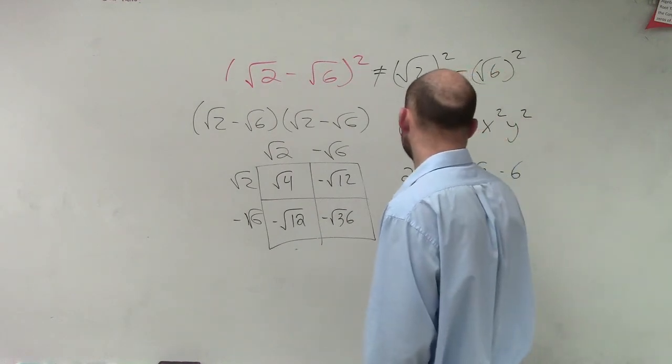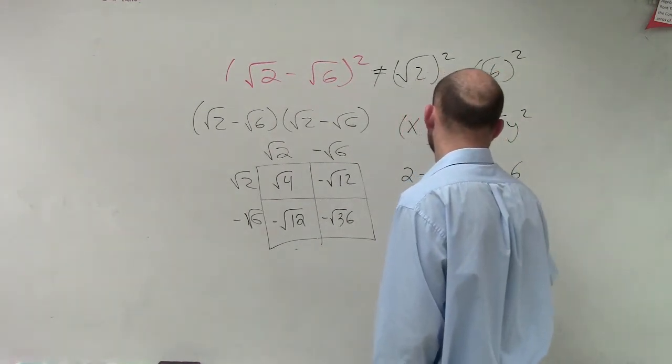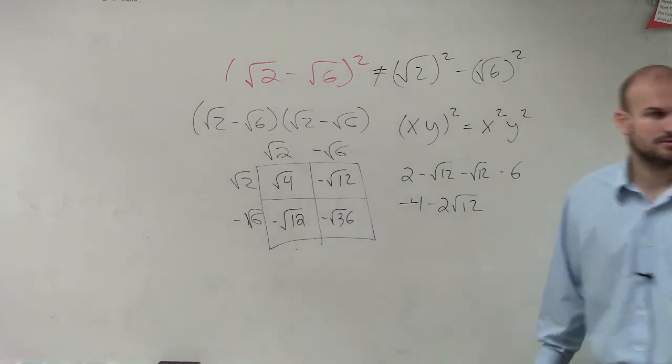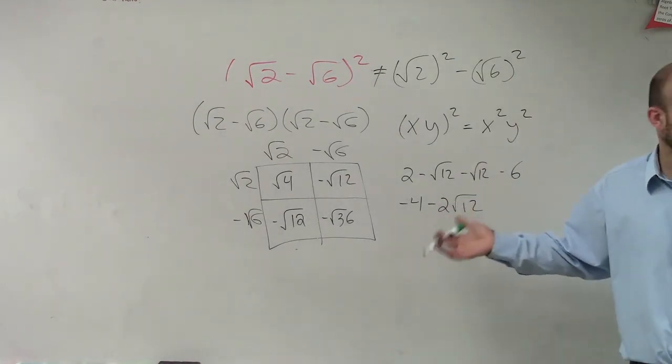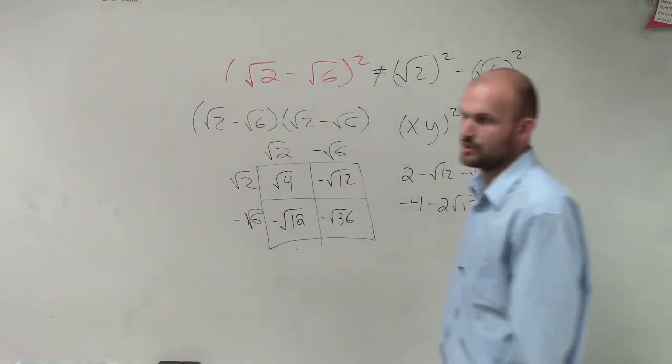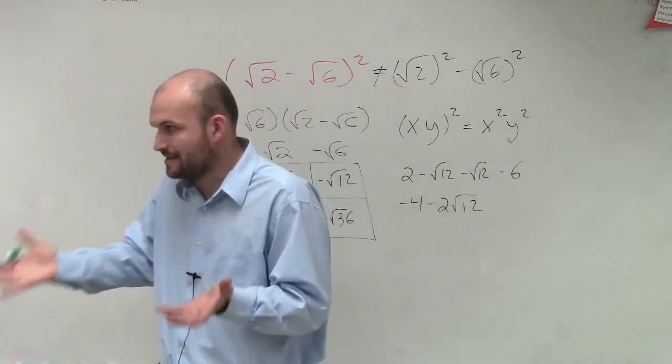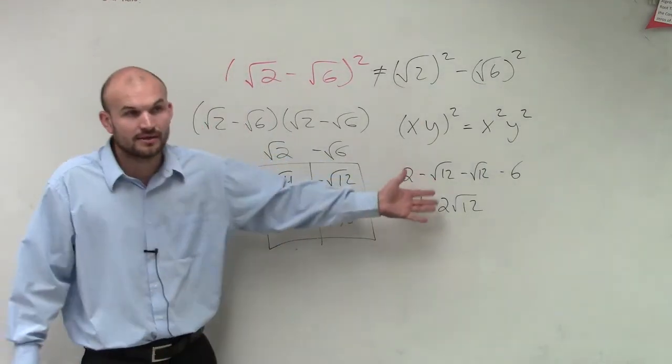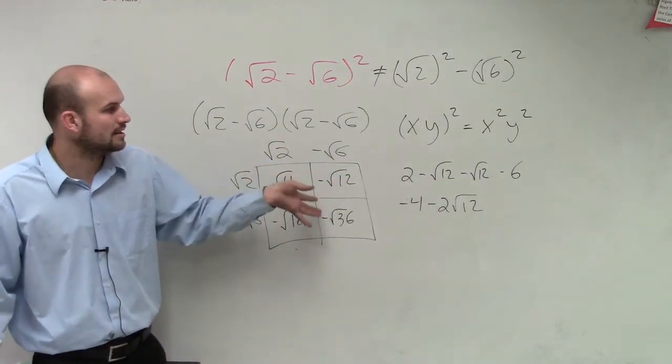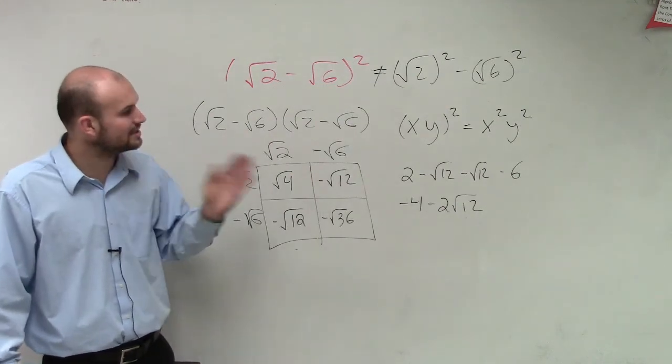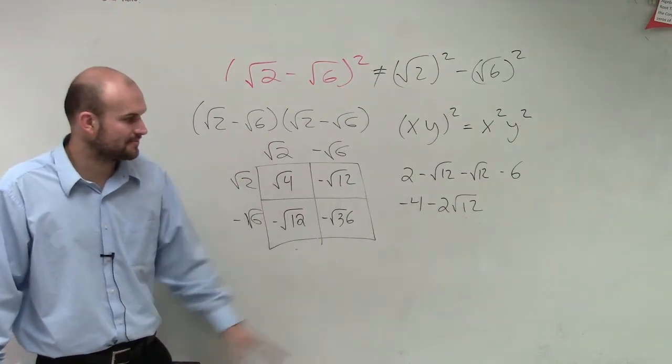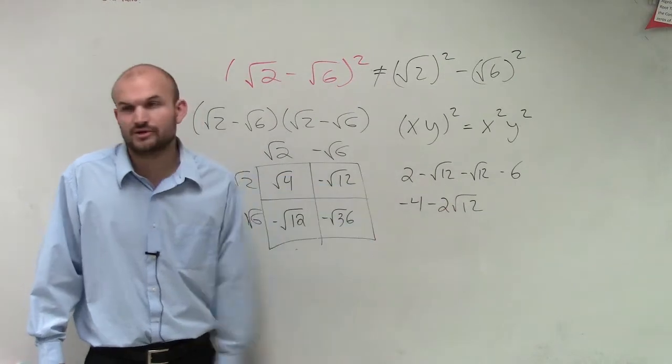So 2 minus 6 is negative 4 minus 2 square root of 12. x minus x is 2x. Negative square root of 12 minus negative square root of 12. Remember, you can't subtract inside. You can multiply and divide, or you can multiply, but you cannot add or subtract.